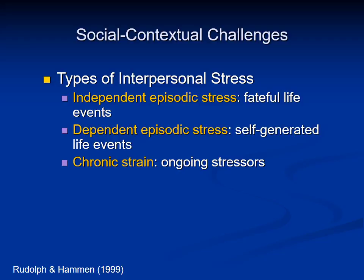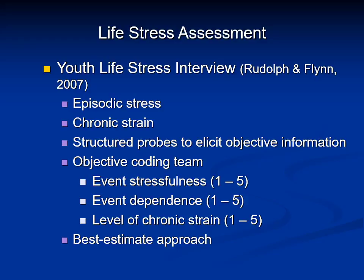We were interested in three types of interpersonal stress: independent episodic stress, which is fateful life events that are typically beyond people's control; dependent episodic stress or self-generated life events that youth contribute to in some way; and chronic strain or ongoing stressors in relationships. The research I'll discuss today used the Youth Life Stress Interview to assess stress — a semi-structured interview providing a comprehensive measure of stress across all domains of children's lives. The goal of the interview is to disentangle objective stressors from subjective stress. Information is presented to an objective coding team that rates each event for how stressful it would be to the typical child, how dependent the event was on the youth's own behavior, and the degree of chronic strain experienced in various domains.